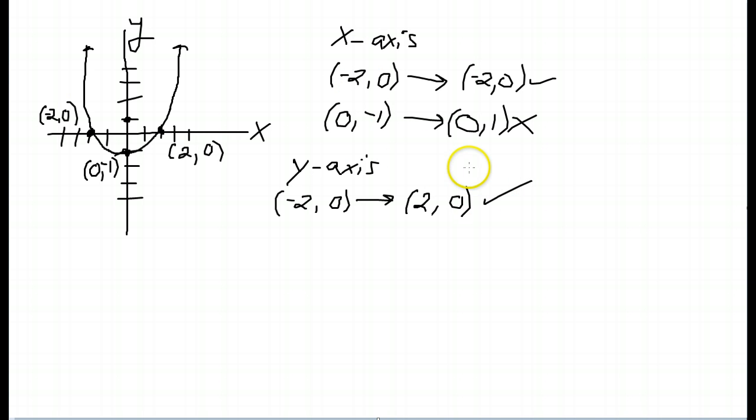So, that one checks. Let's try the next point. 0, negative 1. When I change the x-coordinate, well, the opposite of 0 is still 0. The negative 1 stays the same. That point is on the graph. So, that point checks.